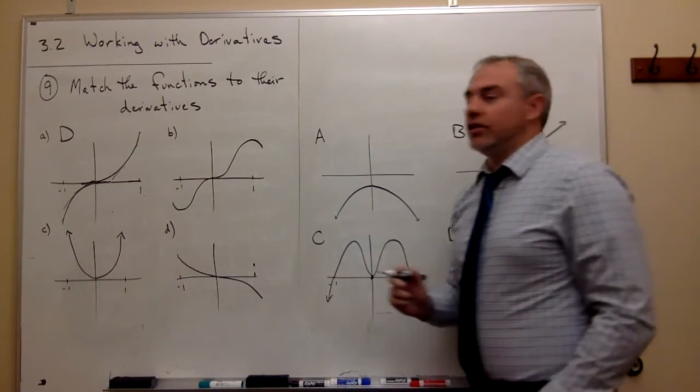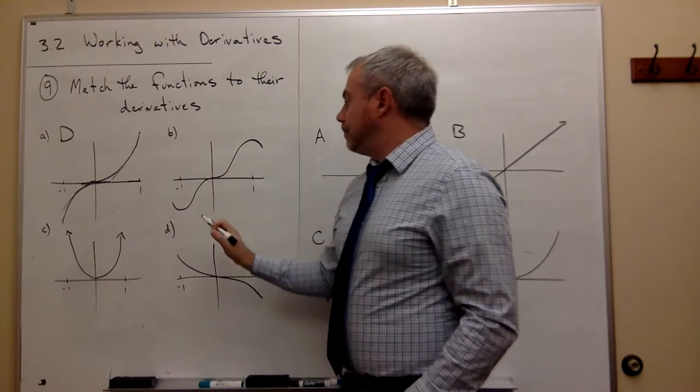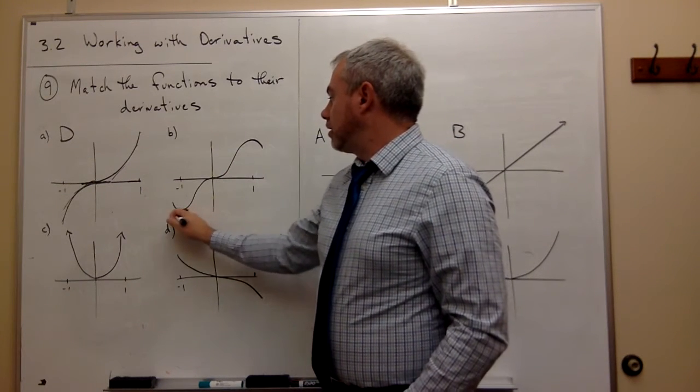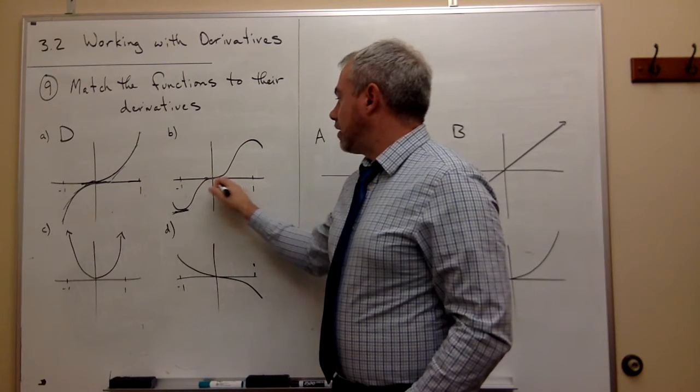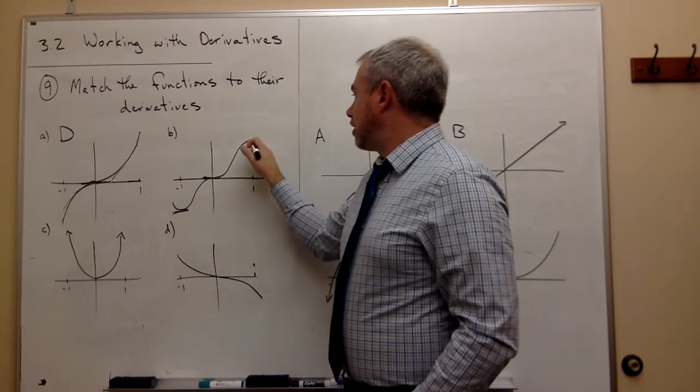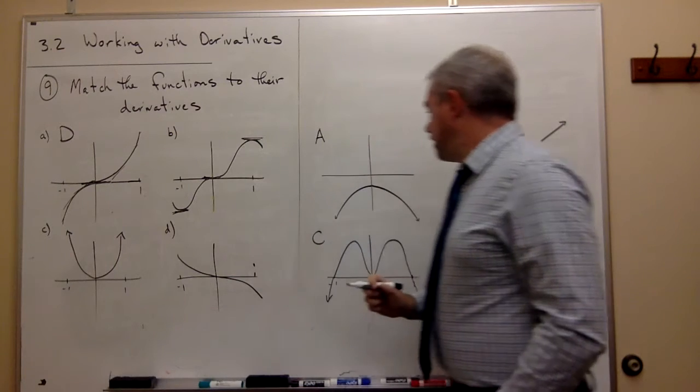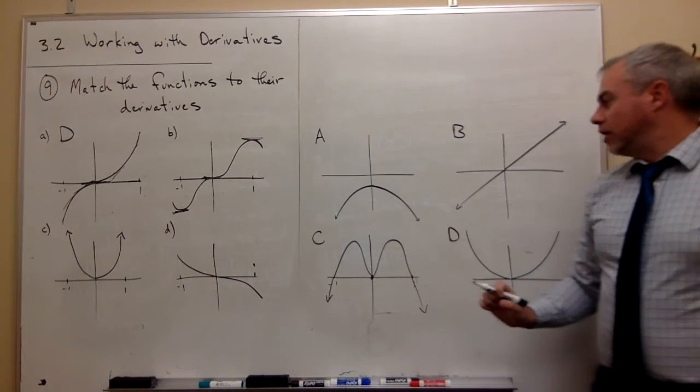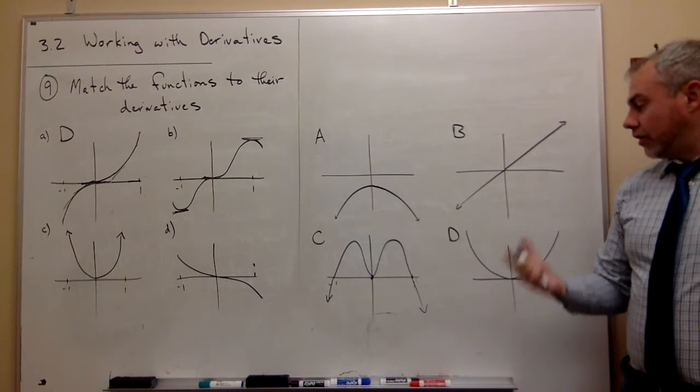Now let's look at b. In b, we see that there are three spots where the derivative is zero: at negative one, at zero, and at one. So if I come over here, where is the derivative zero at negative one, at zero, and at one?